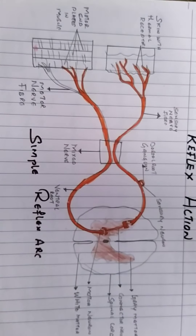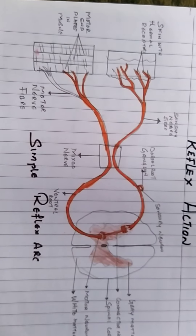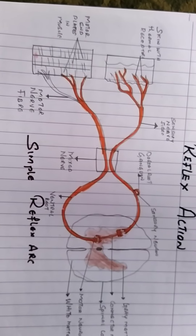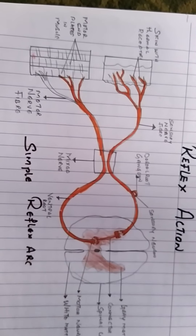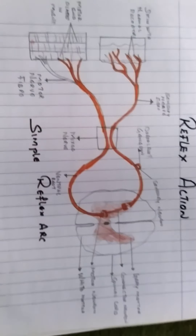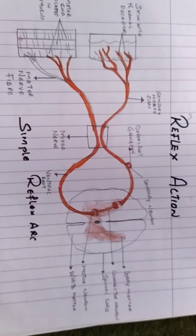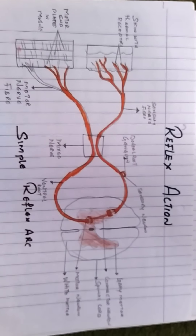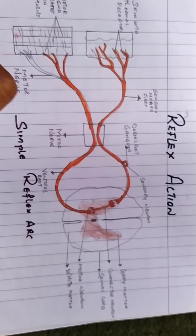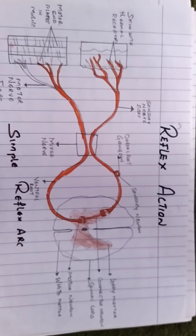The brain and spinal cord are the coordination centers, and in that process the signals are received and the effectors are ordered to act accordingly. Some of the signals need to be analyzed before a response is made. In that case, the reflex action plays a significant role, where we analyze how and where a response is to be made.